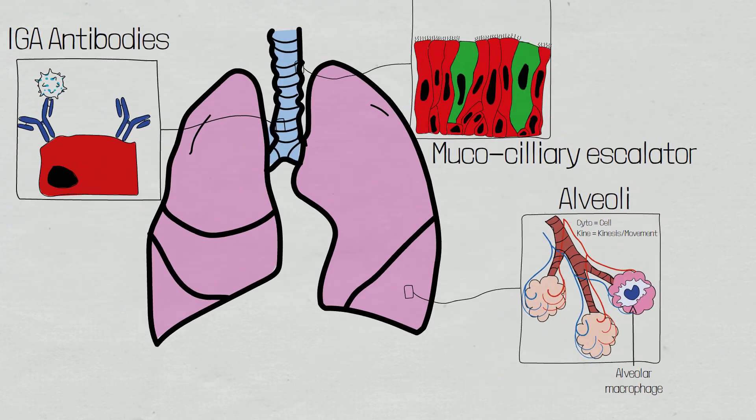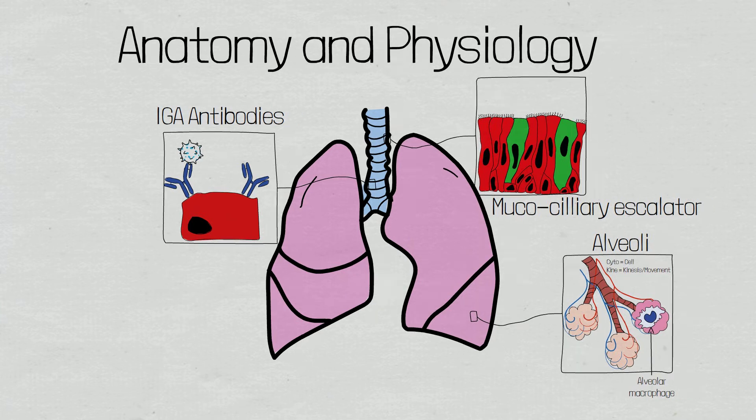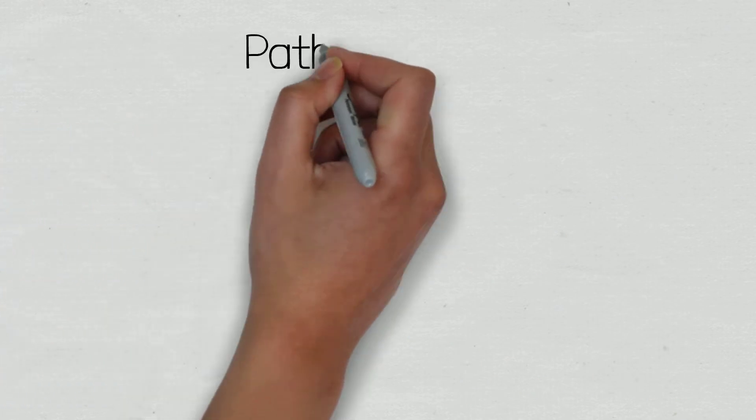When irritants stimulate the cells within the respiratory tract, it initiates the cough reflex, which provides forceful expulsion of air and pathogens. Despite the combined defence mechanisms of the mucociliary escalator, immunoglobulin A antibodies and the alveolar macrophages, pathogens are still sometimes able to invade and infect the respiratory system. Now that we have an understanding of normal respiratory defence mechanisms, let's look at the pathophysiology of pneumonia.